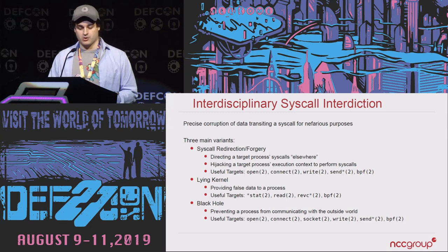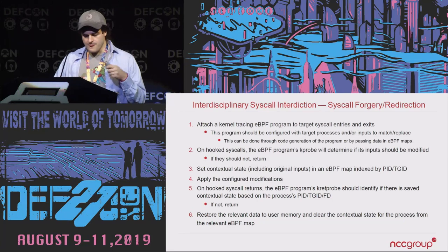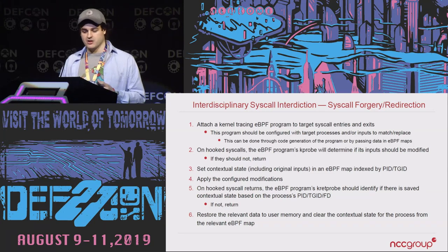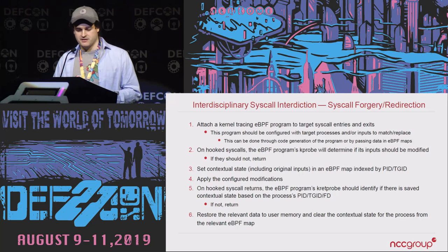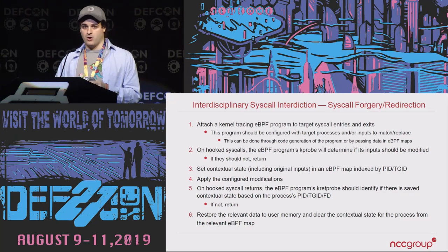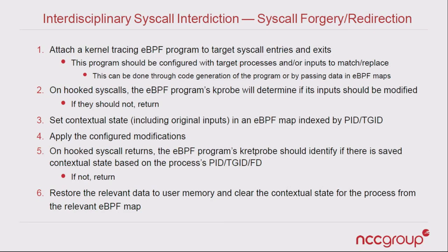There are a few high-level variants for building a rootkit this way. You can redirect syscalls — make opens for a shell script open a path you control somewhere else, so it just opens and reads your code. You could send bad data back on every read, just lying. You can stomp over kernel-written data with your own data after the fact, or fake the return by aborting the call and writing the data yourself. You can also completely black-hole the data so they just can't communicate with the outside world. When you do this, you want to be very careful you're not going to crash stuff — all calls across the entire system share the one kernel.